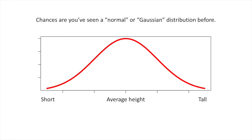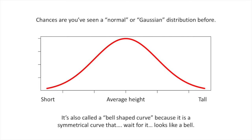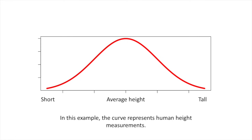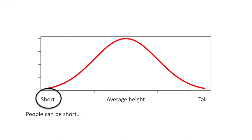Chances are you've seen a normal or Gaussian distribution before. It's also called a bell-shaped curve because it's a symmetrical curve that, wait for it, looks like a bell. In this example, the curve represents human height measurements. People can be short, average, or tall, or anywhere in between.